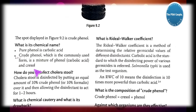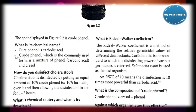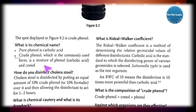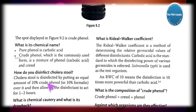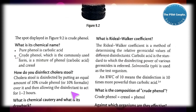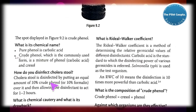Phenol is carbolic acid. The commonly used form — crude phenol — is a mixture of phenol (carbolic acid) and cresol. Pure phenol is only carbolic acid, but the crude phenol we study as a spot is a mixture of carbolic acid and cresol. How do you disinfect cholera stool? Cholera stool is disinfected by putting an equal amount of 10% crude phenol or 10% formalin over it and allowing the disinfectant to act for one to two hours.